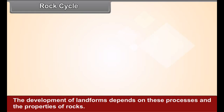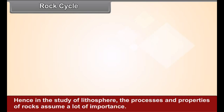Rock cycle: sedimentary rocks are formed through the processes of erosion out of the rocks exposed on the surface of the Earth. From the igneous and sedimentary rocks, metamorphic rocks are formed. All these three types of rock move into the mantle in the process of plate consumption. They come to the surface again in the form of primary igneous rocks. This cycle goes on continuously — it is called the rock cycle.